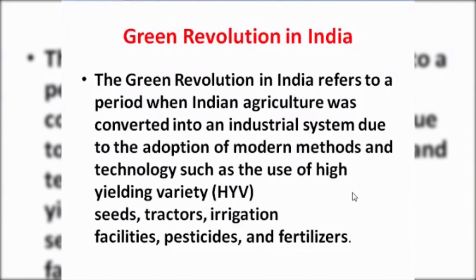We have to know about the green revolution in India. Green revolution in India refers to the period when Indian agriculture was converted into an industrial system due to the adaptation of modern methods and technology such as the use of high yielding variety of seeds, tractors, fertilizers, etc. So, when by using the modern method and technology, the Indian cultivation system is changed in such a way that the total production is increased, this is known as green revolution in India.